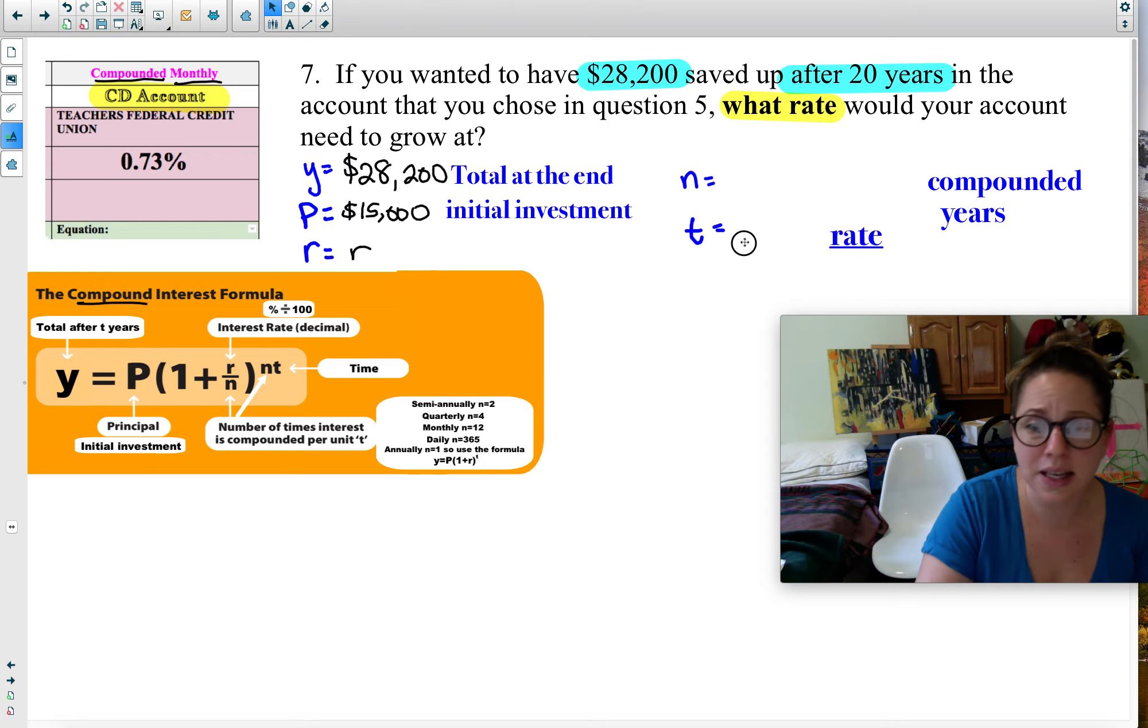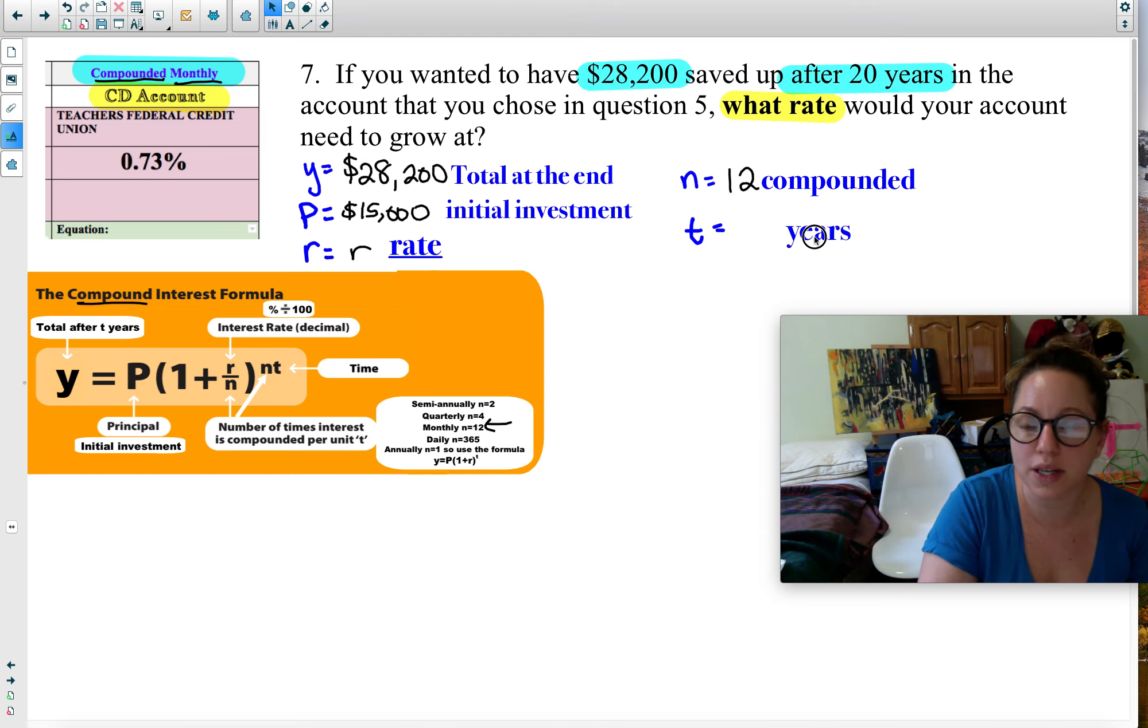Next is the N. N is how many times it's compounded. I have to look for the word compounded, come back up here, and I see it right here, compounded monthly. So I come back down here for monthly, and it says 12. So that means my N is going to be 12. And lastly is how long? What is the time in years? 20 years. So I'm putting 20 in for years.